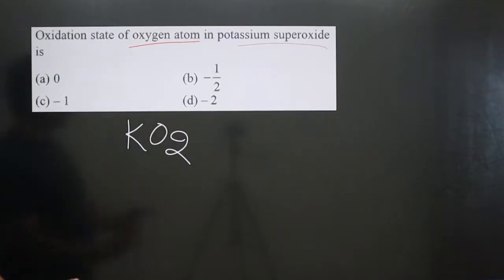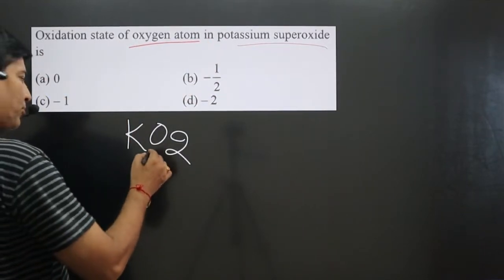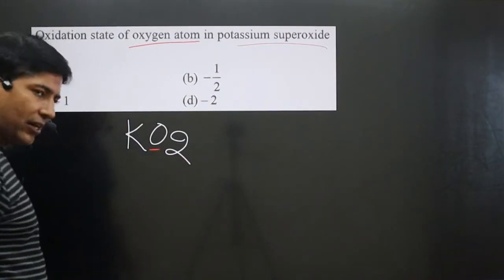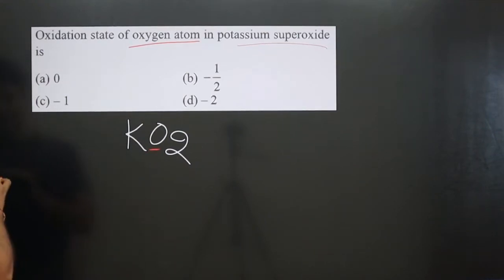This is the chemical formula, potassium superoxide KO2, in which we have to calculate the oxidation number of oxygen. Now pay attention very carefully - it is a neutral compound.